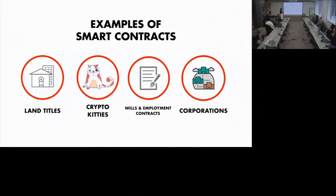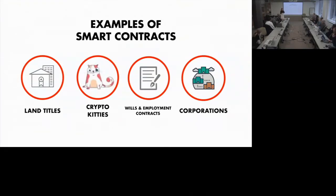Wills and employment contracts: smart contracts can transfer assets upon a specific event, such as death or performance of work. But these types of contracts are outside the traditional legal framework. There are interesting projects happening — like OpenLaw by ConsenSys, which is creating a legal markup language so that when a lawyer drafts a legal contract, those inputs will be put into a smart contract and deployed on the Ethereum blockchain. This could change the nature of the employment relationship — for example, instead of being paid every two weeks, you could be paid by the minute as you're working, with money sent directly to your bank account.